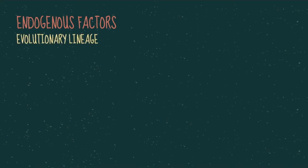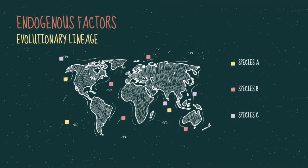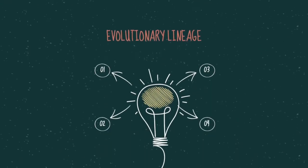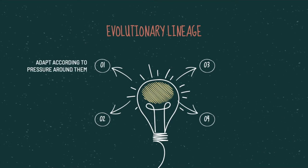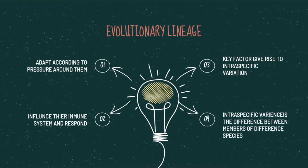The next factor is evolutionary lineage. Different species of fish scattered all over the world adapt to their environment according to the pressures around them, which influences their immune system and immune response. Evolutionary lineage is also a key factor that gives rise to intraspecific variation, which is the difference between members of different species.